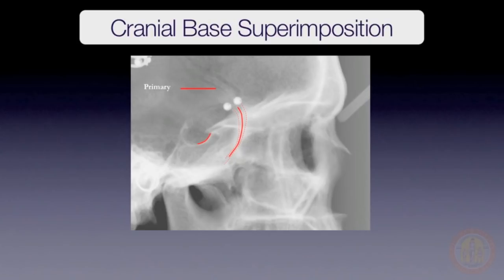The primary structures for vertical orientation are, first, the intersection of the anterior wall of sella and the anterior clinoid processes, and second, the cribriform plate. If the cribriform plate cannot be clearly seen, the ethmoidal crest should be used. If these structures are not clearly visible, then the planum sphenoidale and cerebral surfaces of the frontal bone should be used.